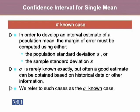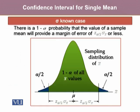We refer to such cases as the sigma known case. There is a 1-alpha probability that the value of a sample mean will provide a margin of error of z alpha by 2 times sigma x-bar or less.